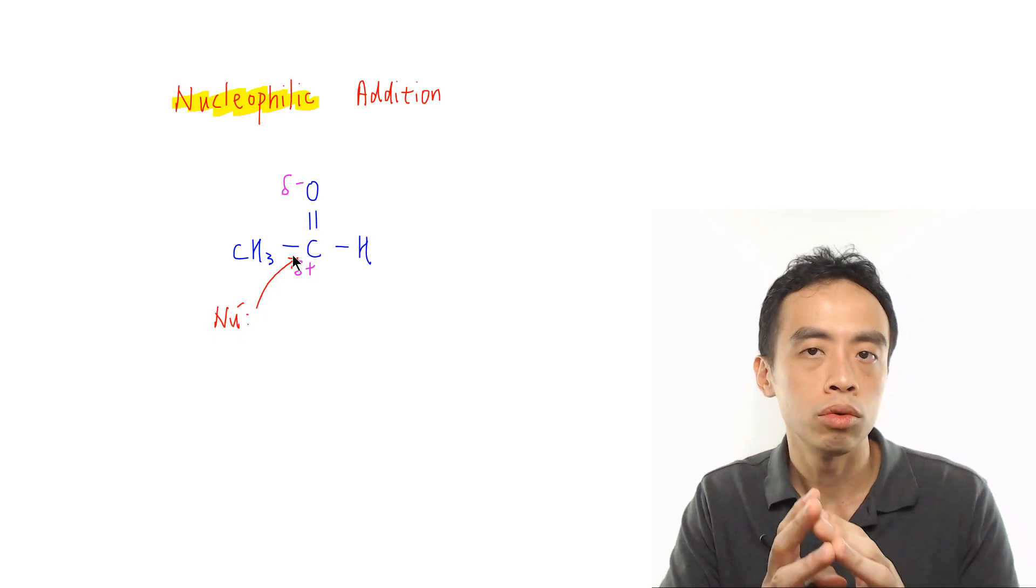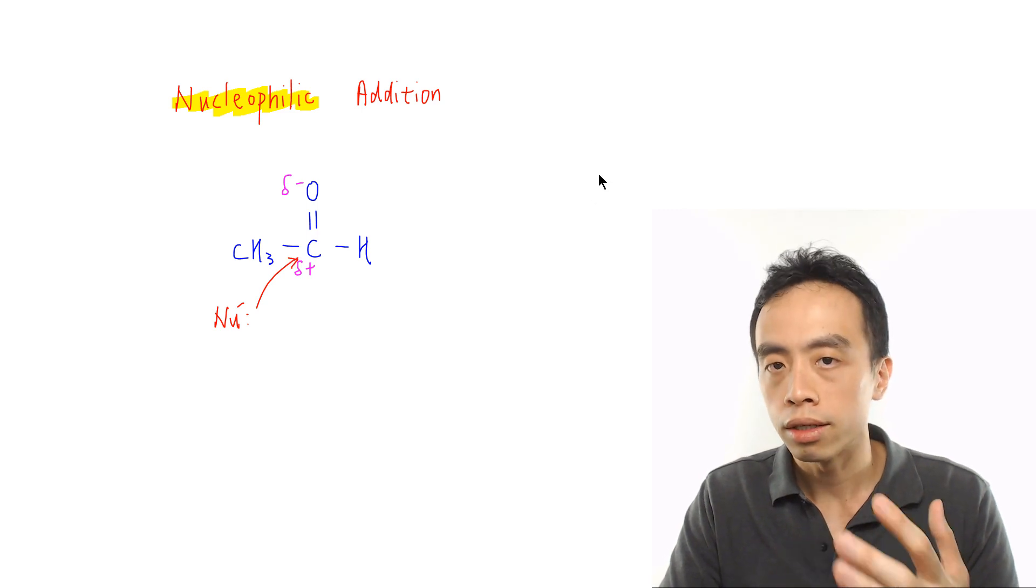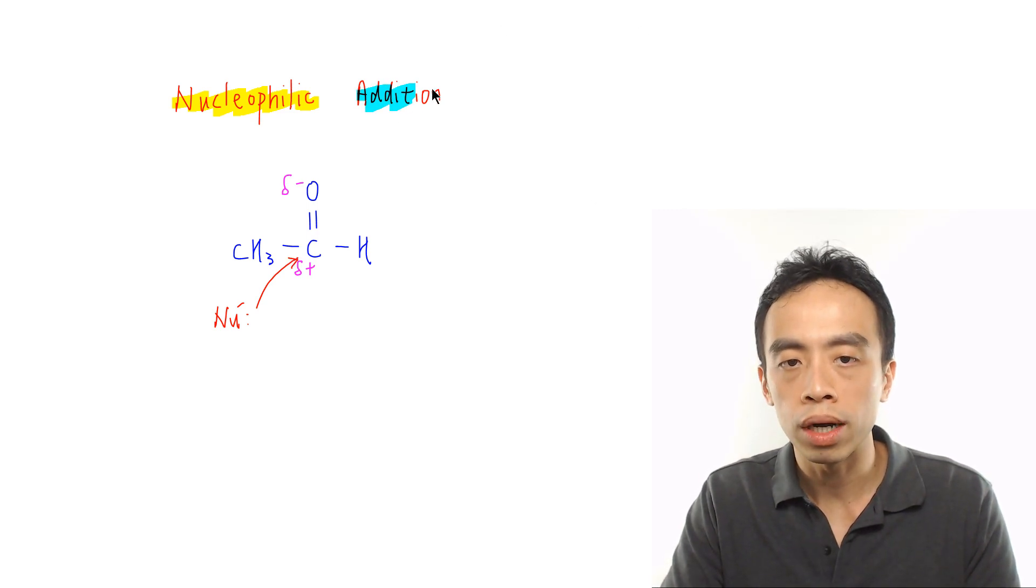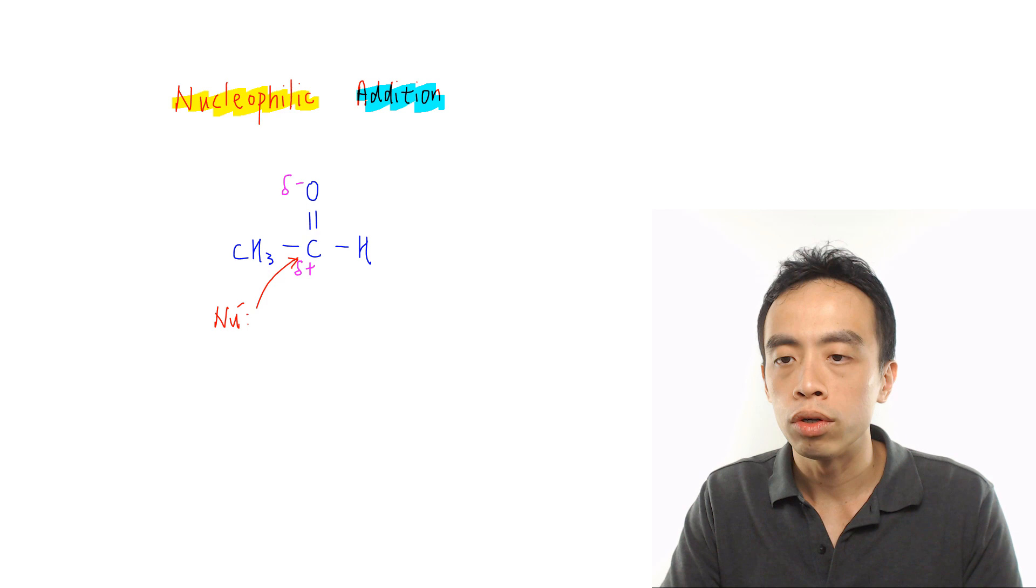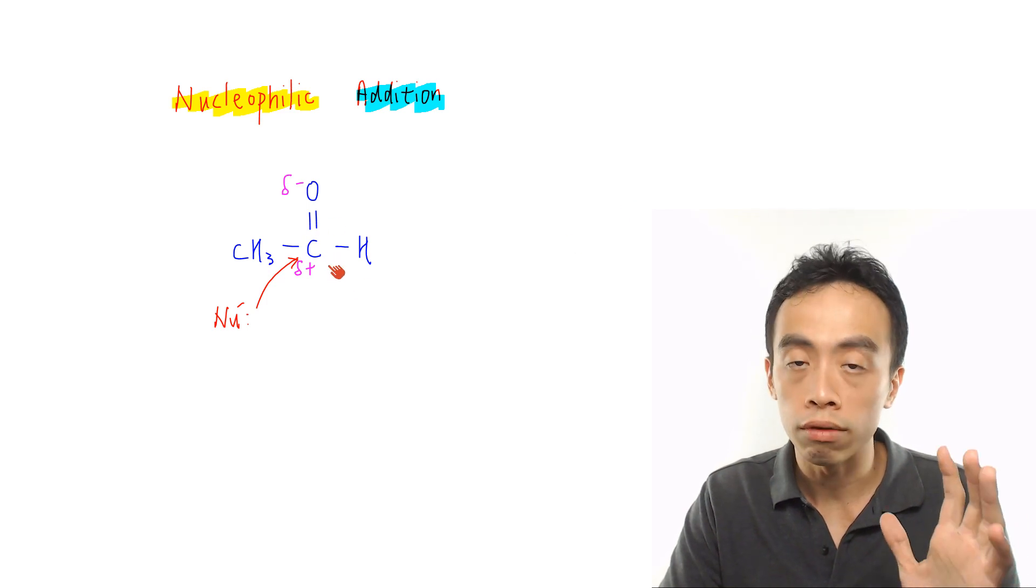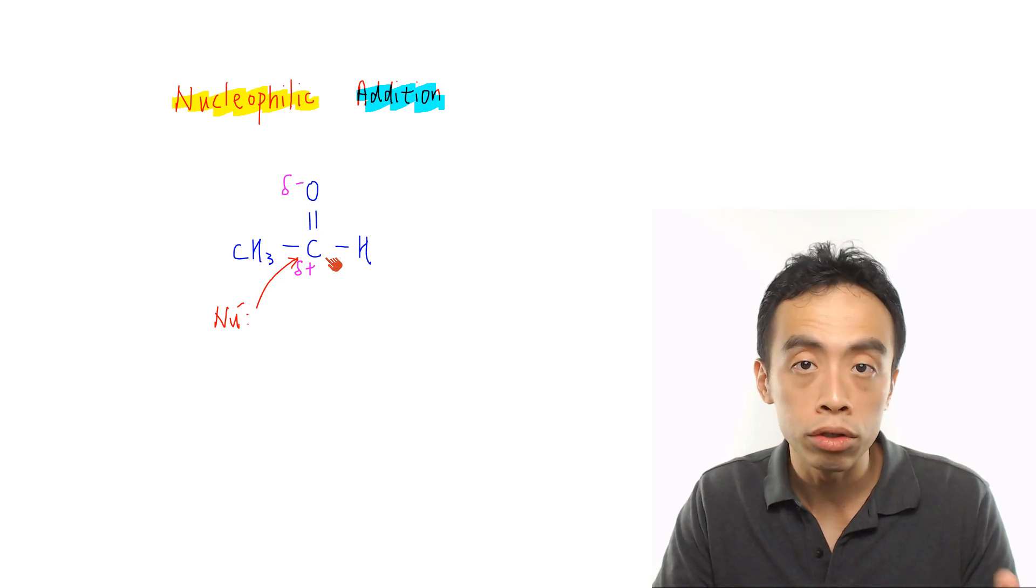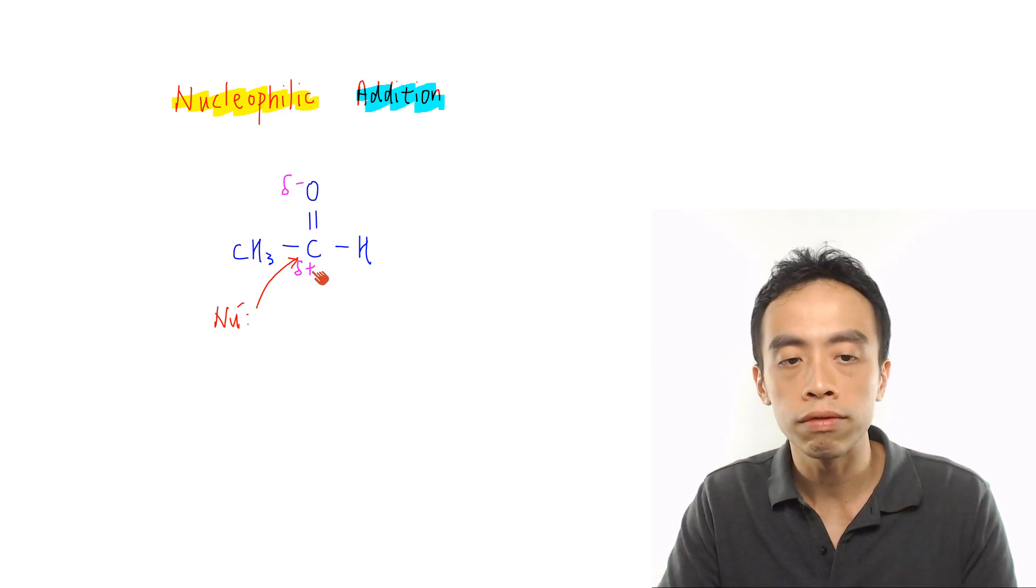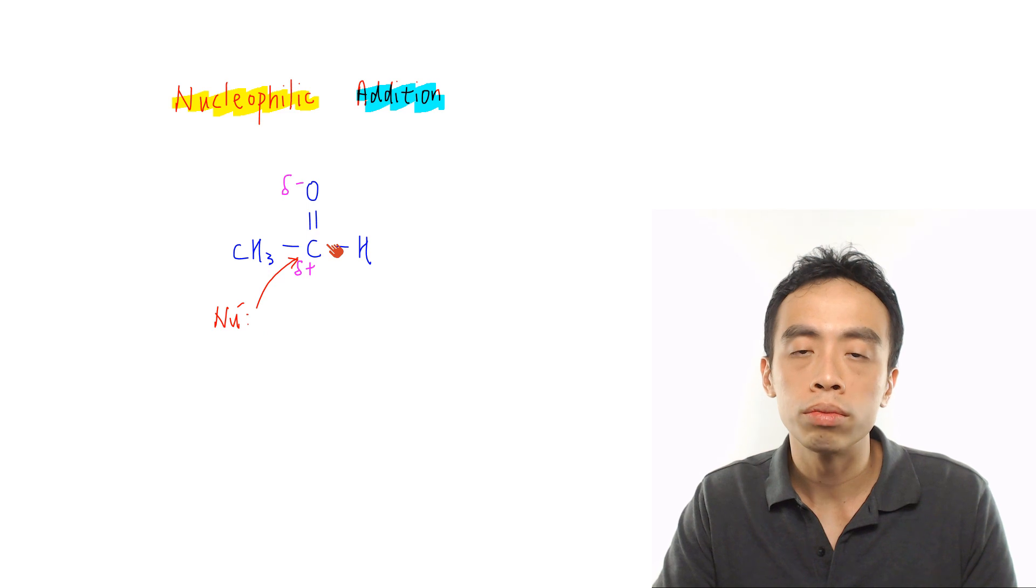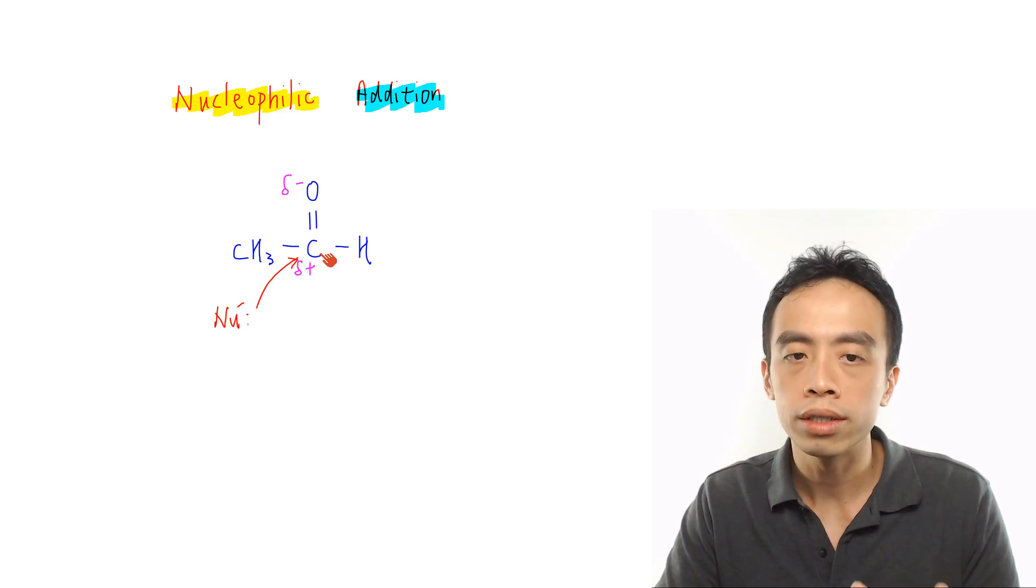The second portion: why would carbonyl compounds undergo addition reaction? We look at the degree of saturation of carbon. This carbon is unsaturated, so it can undergo addition reaction. It takes in the nucleophile and can retain all the other groups already attached to this carbon.